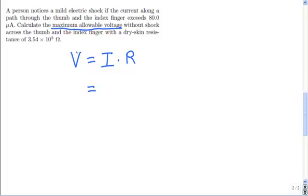The current is going to be 80 microamps. What is a microamp? Well, micro is the prefix meaning 10 to the negative sixth. So we'll write that as 80e-6.